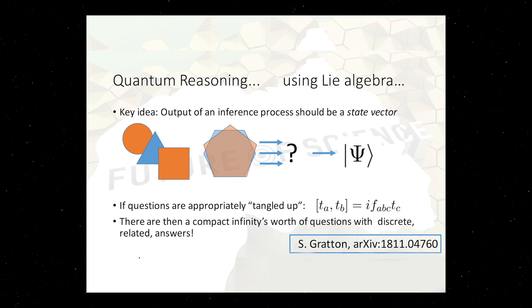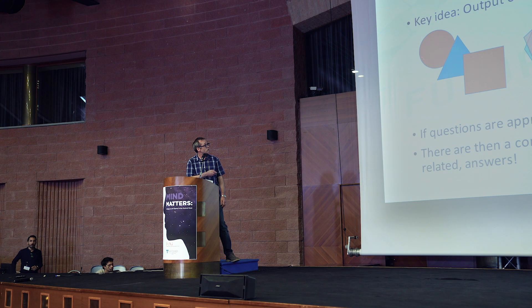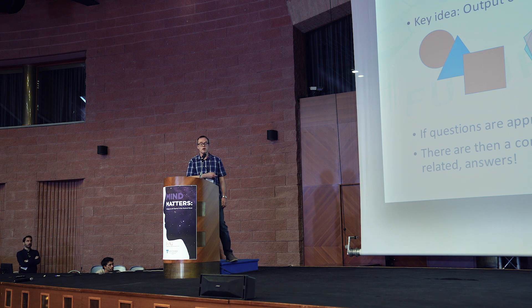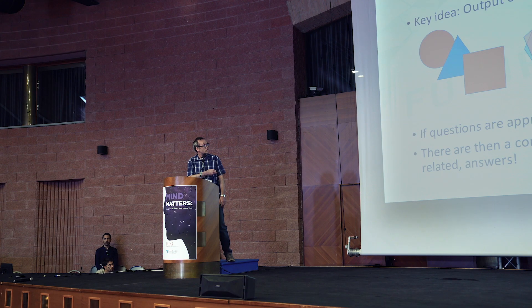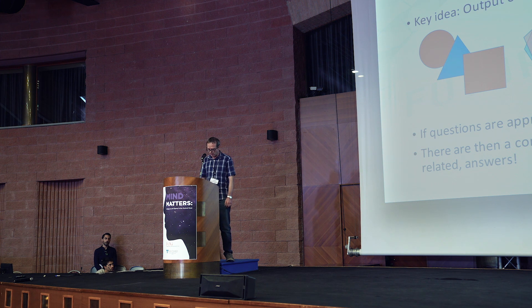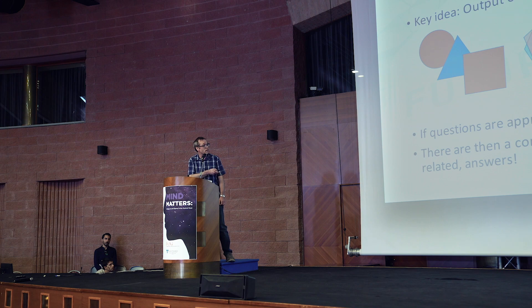Quantum reasoning, what do I have in mind? Well, we might have some question, we're going to be given some input, and we might suspect it might be a circle, triangle, or square, and then we want to get an output from our inference process. What we might normally expect is, this is a square, this is a pentagon, or whatever. I want to argue that the output of an inference process should be a state vector.